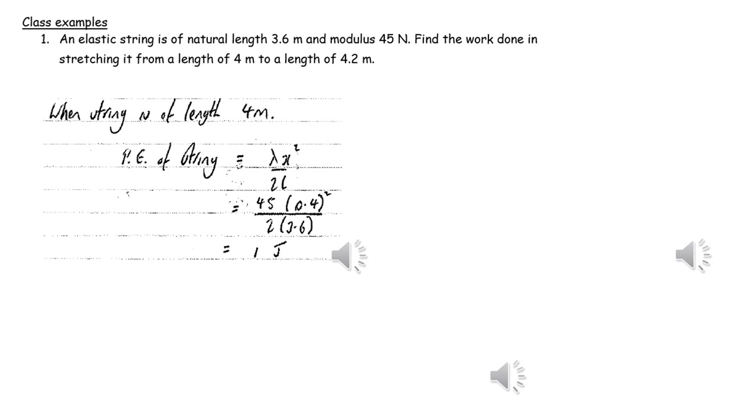We first of all work out the elastic potential energy when it's at a length of 4 meters by using the fact that elastic PE is lambda x squared over 2L.